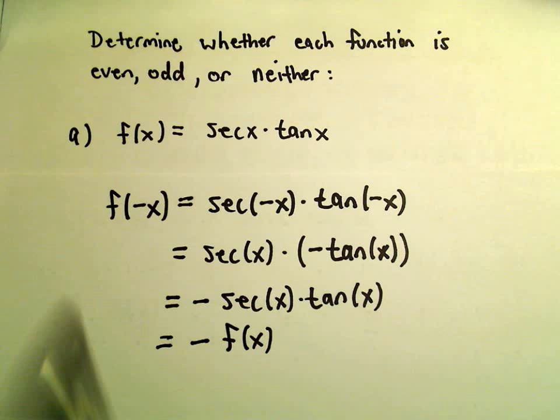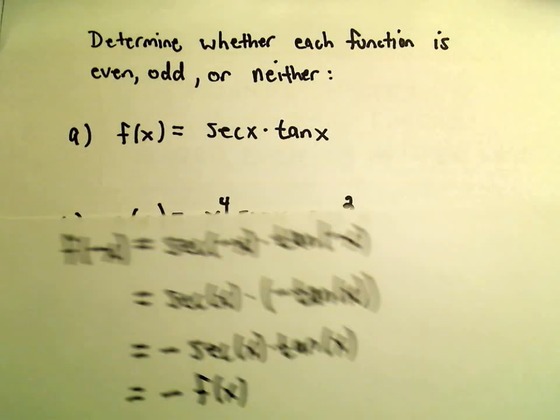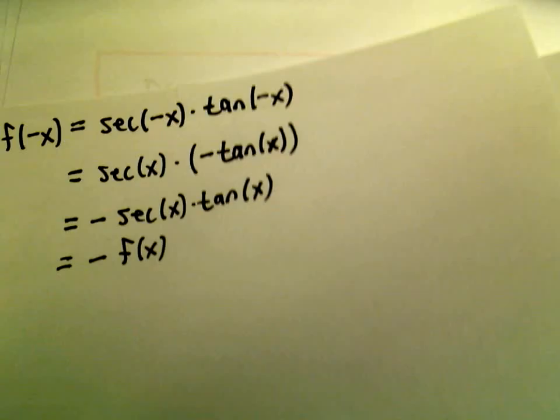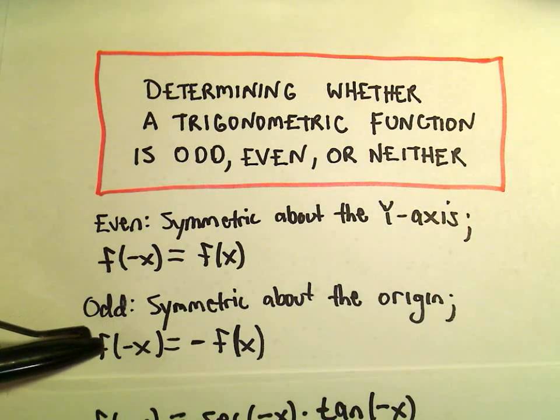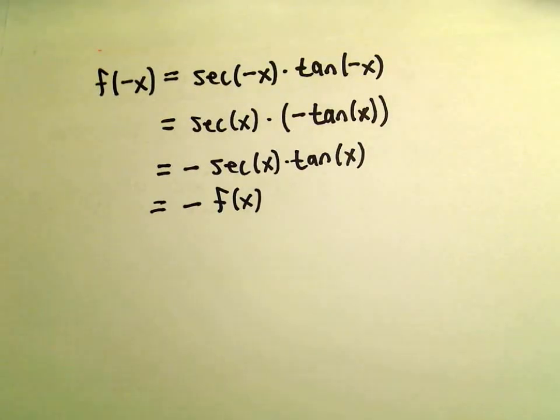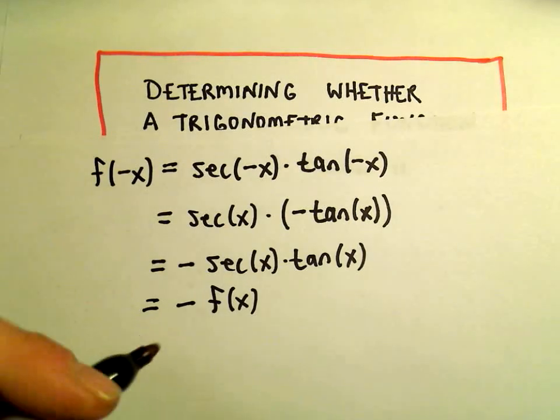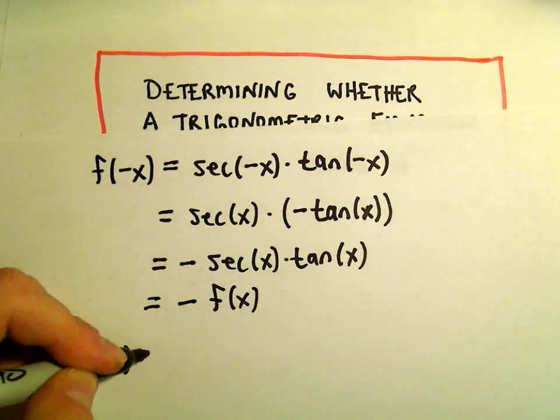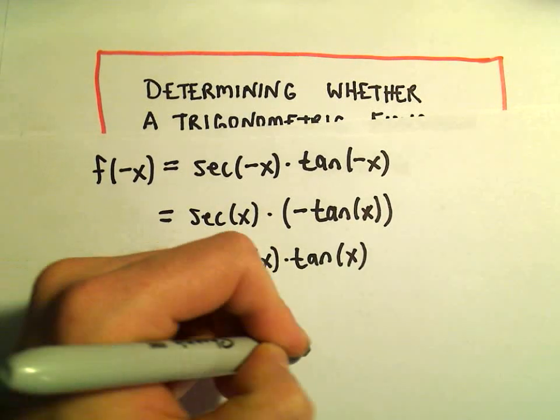So we plugged in f of negative x, we got out negative f of x. And in terms of our definitions, if you start with f of negative x and get out negative f of x, we would say that function is odd. So it turns out that if you graph secant x times tangent x, that's going to be an odd function.